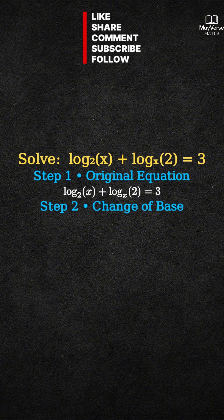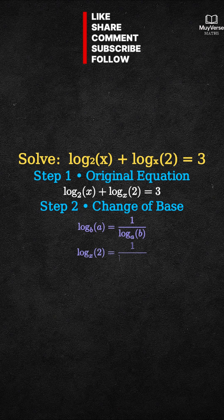Use the change of base identity. The key identity is log base b of a equals 1 over log base a of b. Apply it to the second term, log base x of 2.